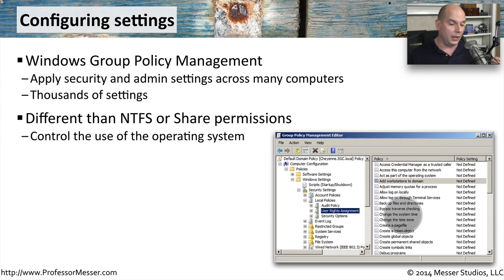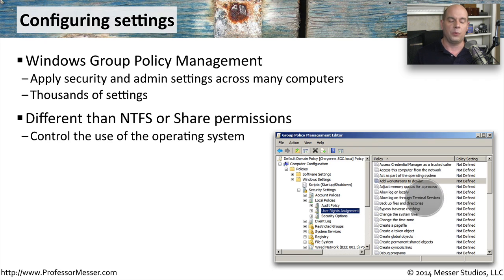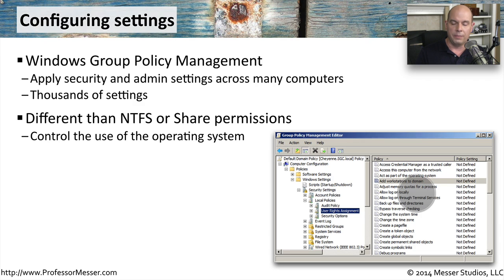Here are some good examples of user rights assignments within group policy. If you wanted to allow or not allow someone to change the system time, you can do that within group policy. You can allow or not allow someone to change the time zone, adjust memory quotas for a process, or allow or disallow someone from logging on locally. There are thousands of these to choose from, and that gives the administrator a lot of control.